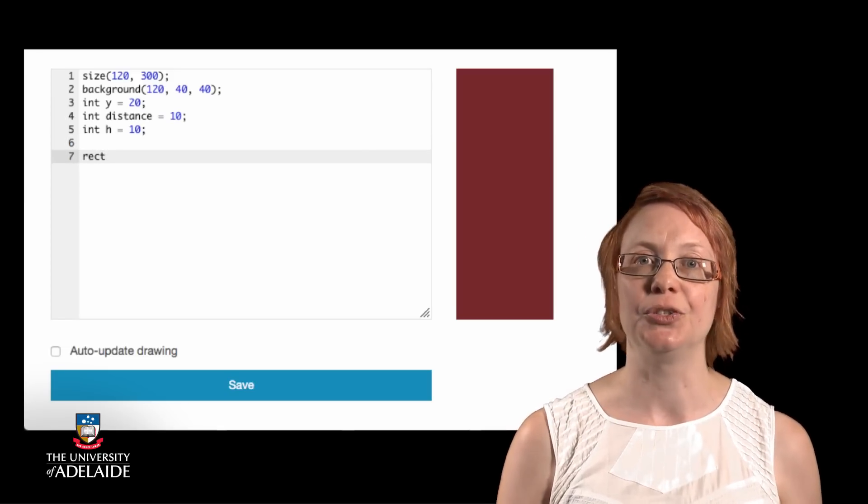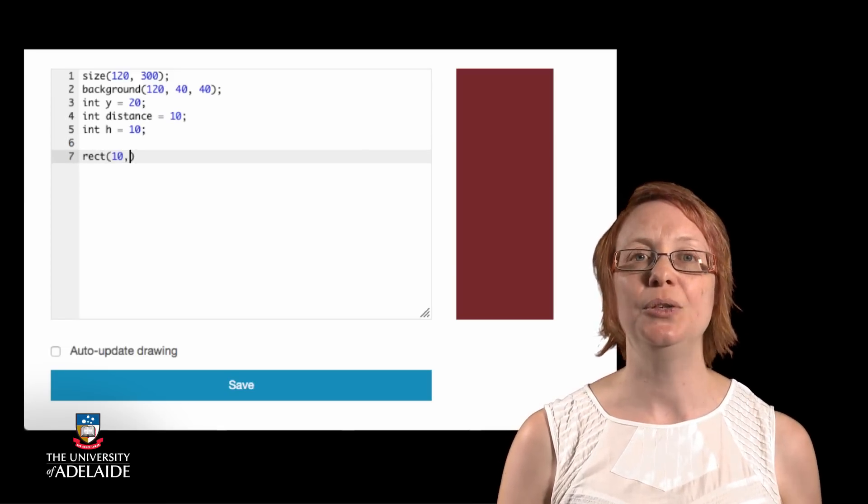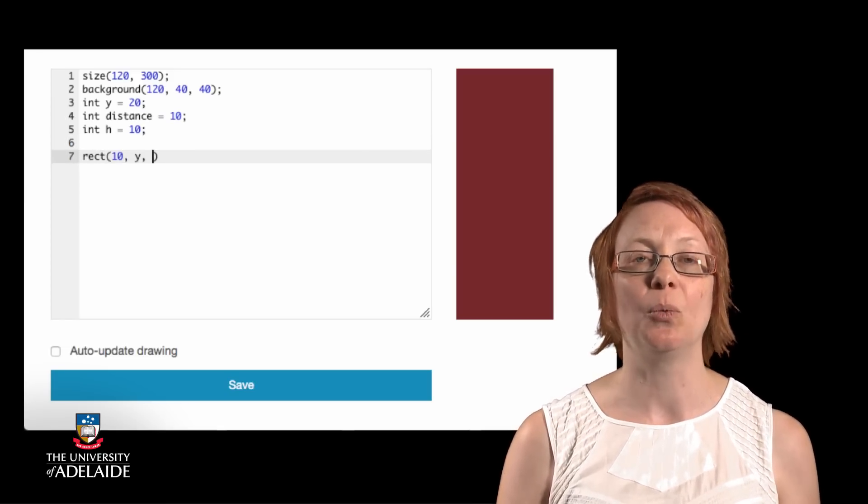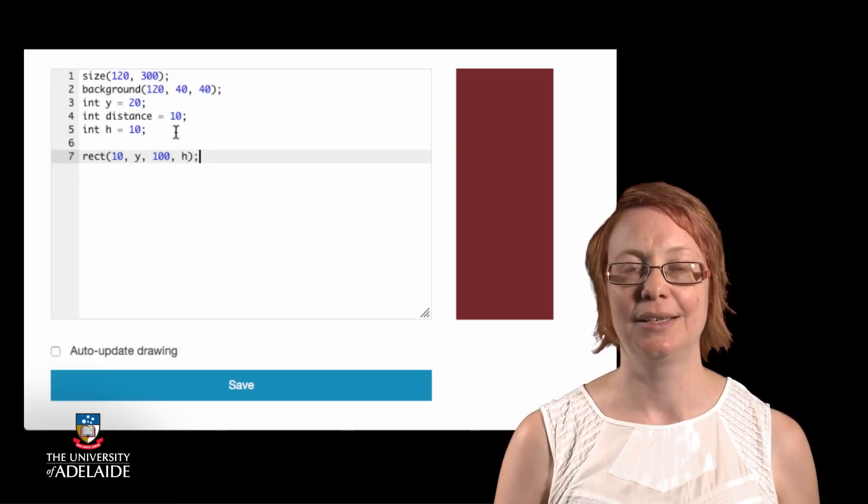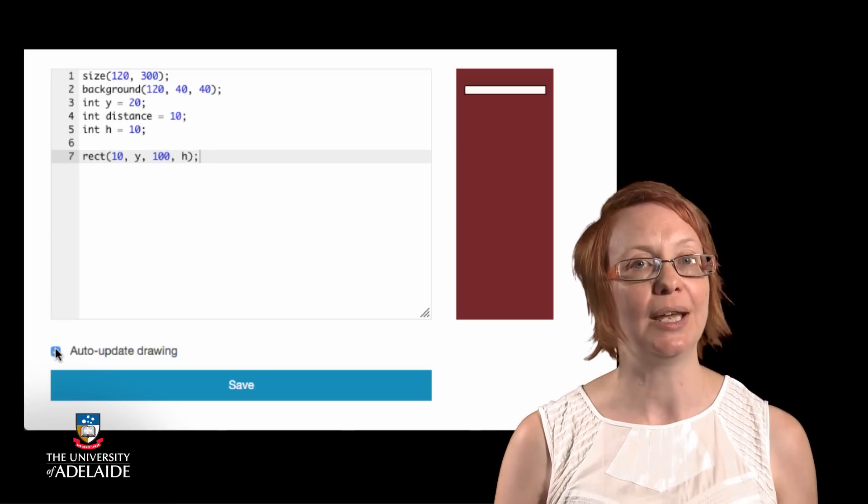When we call the rect function to draw the rectangle, we then use the Y variable in place of the Y coordinate value, and the H variable in place of the height. This draws our first rectangle like so.